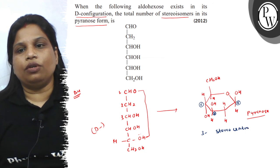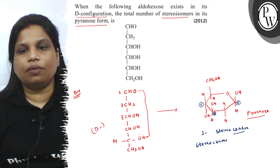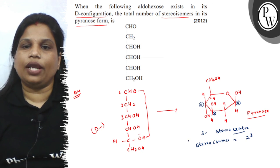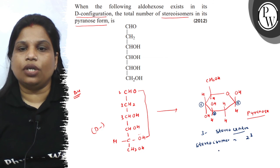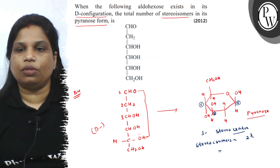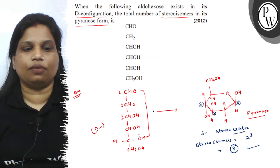So, what will be the total number of stereoisomers? 2 to the power 3. If you have N number of stereocenters, then the total number of stereoisomers are 2 to the power N. And it is 8 stereoisomers that are possible. I hope you understood well. Best of luck.